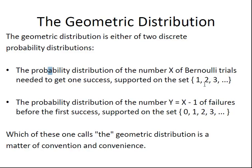That differs from this other formulation. The probability distribution of the number Y equals X-1 of failures before the first success, supported on the set {0, 1, 2, 3}. Now, whichever one of these is called the geometric distribution is a matter of convention and convenience.